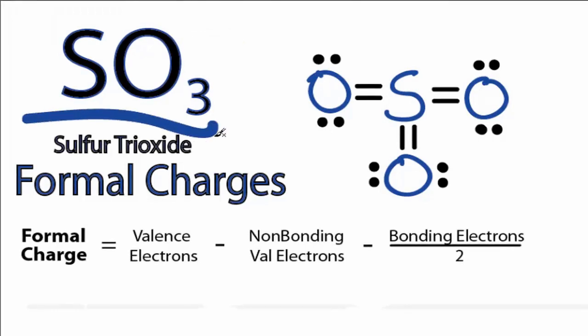To calculate the formal charges for SO3, we'll start with the central sulfur atom. Sulfur is in group 16 or 6A on the periodic table, so it has six valence electrons.